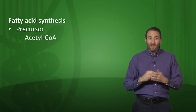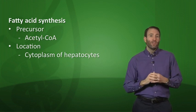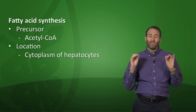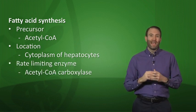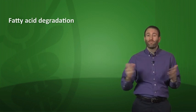Fatty acids are carboxylic acids with a long aliphatic tail, mostly found in triglycerides. Free fatty acids are those not attached to triglycerides. The main precursor for fatty acid synthesis is acetyl-CoA. Fatty acid synthesis occurs in the cytoplasm of hepatocytes. The rate-limiting enzyme of fatty acid synthesis is acetyl-CoA carboxylase — the most important thing to remember about this pathway.